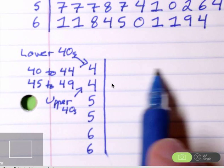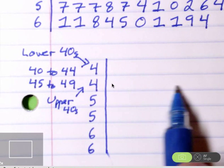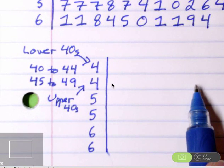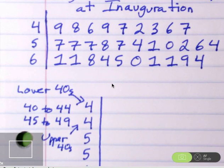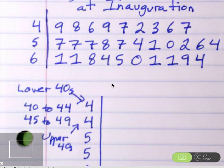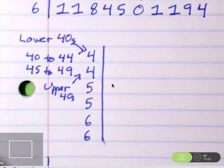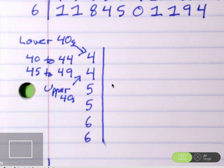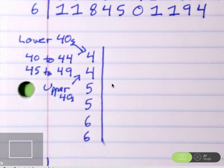Since we're going to take our original stem and leaf plot and we're going to rewrite it, at this point, it's probably worth taking the time to put the stems, well, the stems are already in order, but to put the leaves in order. There will come a time where it will be helpful to have them in order. It's not a requirement of this type of graph to have them in order, but it can be helpful.